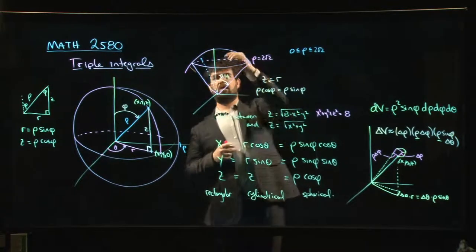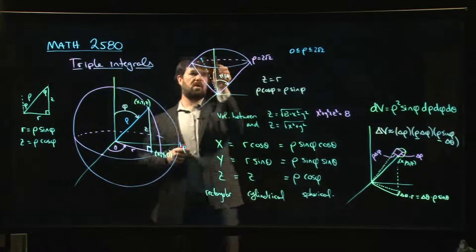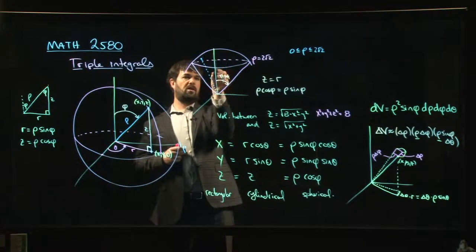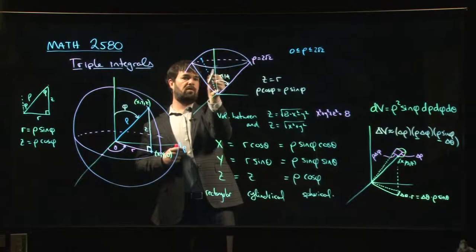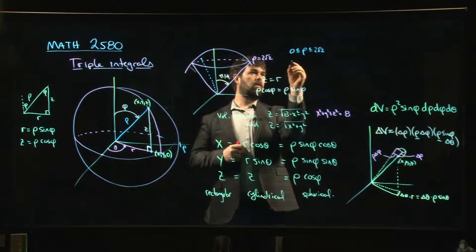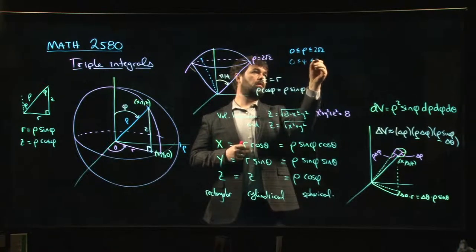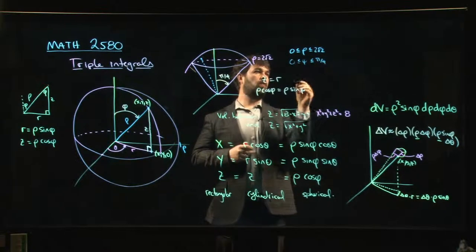So rho is between 0 and the radius of the sphere, which is 2 root 2. Okay, phi, well, phi, we want to sweep out the whole thing, right? And you might think that you should go from minus pi over 4 to plus pi over 4, but you only go from 0 to pi over 4. Why?